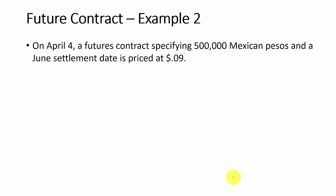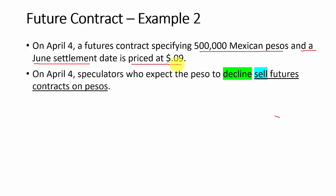Now let's look at the second example. On April 4th, a futures contract specifies 500,000 Mexican pesos at a settlement date of June, and this contract is priced at 9 cents per Mexican peso.